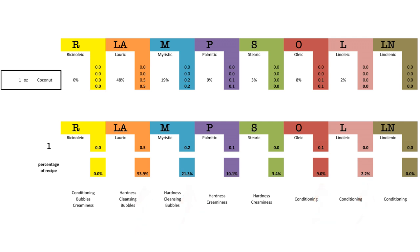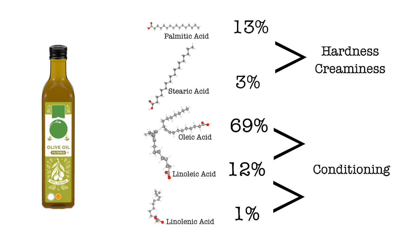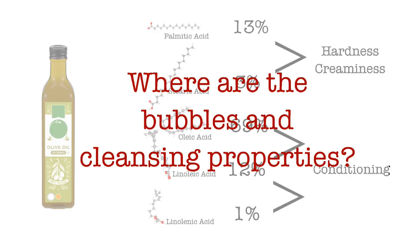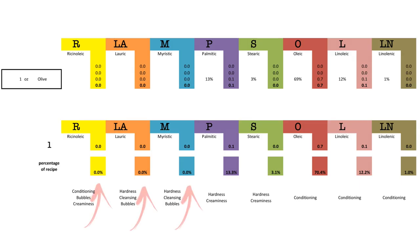We need another oil. Let's use olive oil for our next example. Olive oil is made up in large part of 13% palmitic acid, 3% stearic acid, 69% oleic acid, 12% linoleic acid, and 1% linolenic acid. Perfect! We have an ultra-conditioning bar that is also firm, but if you've ever used 100% olive oil soap, you may notice that it lacks bubbles and may feel a little slimy. This is because olive oil lacks cleansing and bubbling abilities.